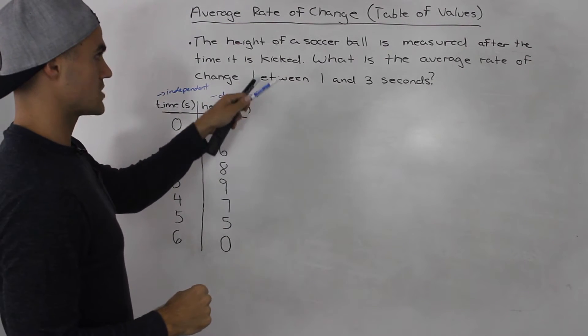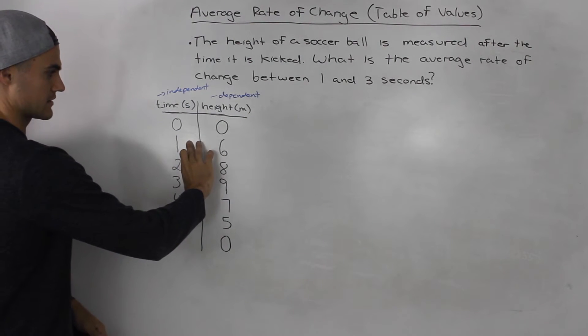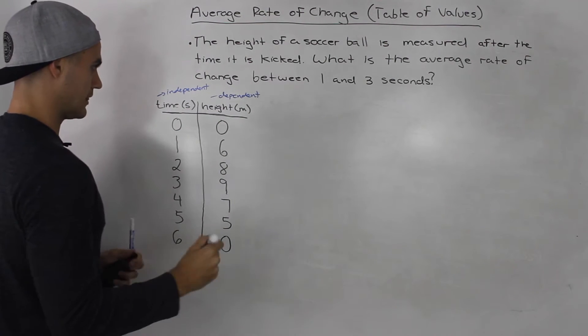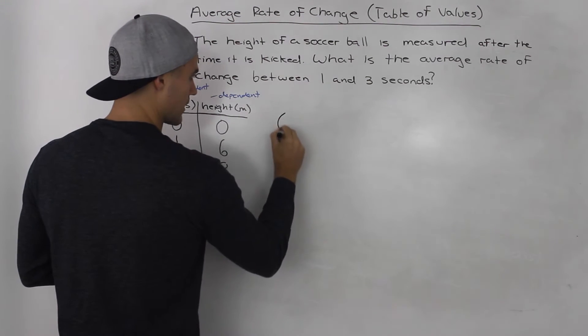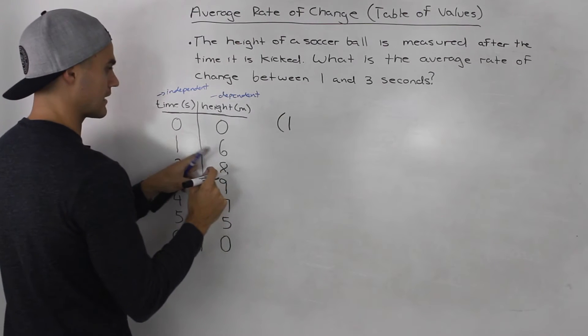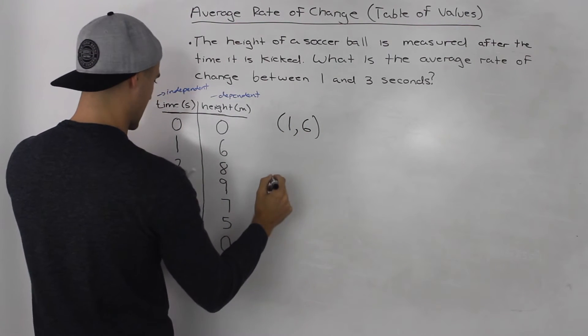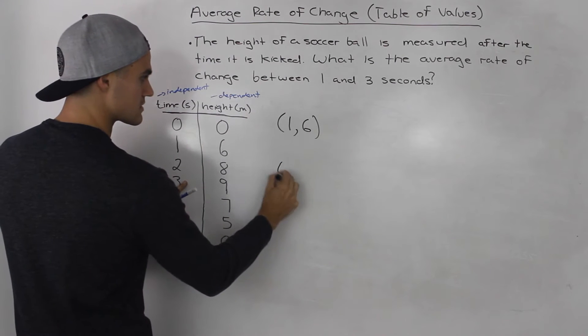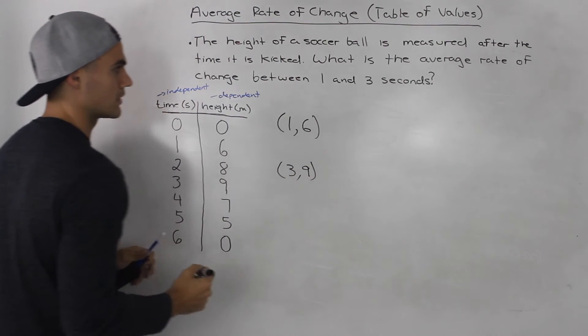What is the average rate of change between 1 and 3 seconds? Let's take those two coordinates and write them out. At 1 second, the height of the soccer ball is 6 meters. And at 3 seconds, the height of the soccer ball is 9 meters.